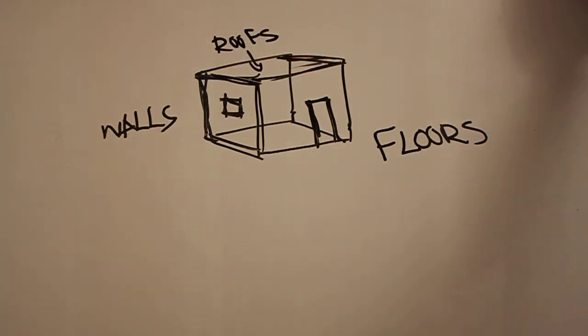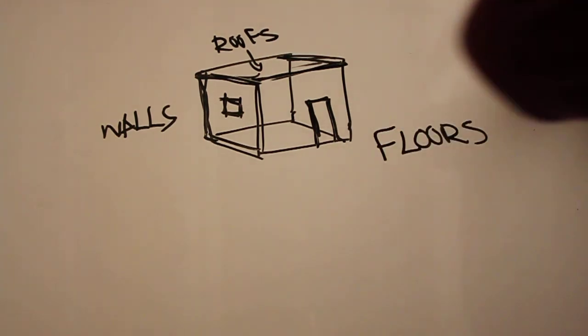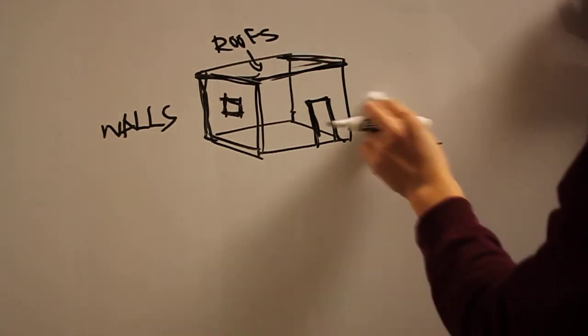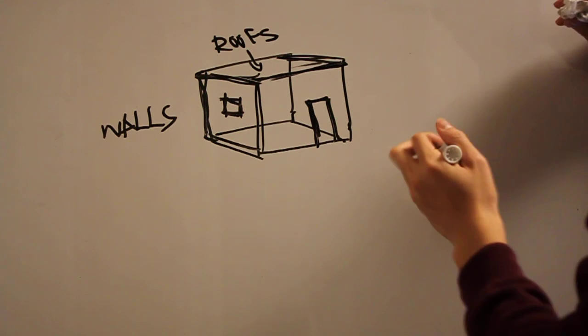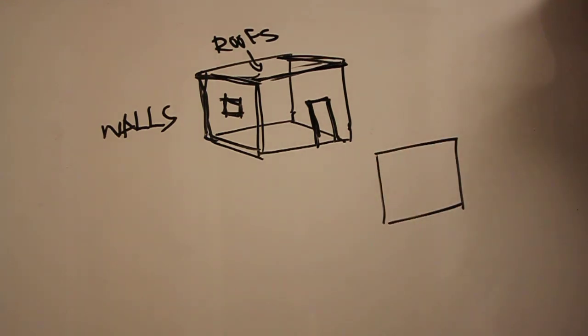So architecture uses these three kinds of walls extensively, or these three kinds of planes. But they really stem from the basic idea of lines being swept in some direction.